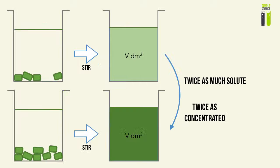For example, if we have a solution where we mix twice as much solute — as in the bottom diagram — as we initially did, we will result in a solution that is twice as concentrated: twice as much solute within the same volume of solution. So concentration is directly related to the amount of solute that we used in the beginning.